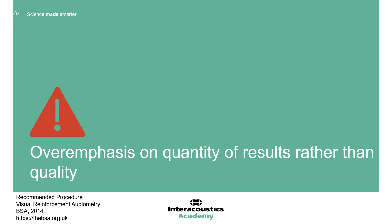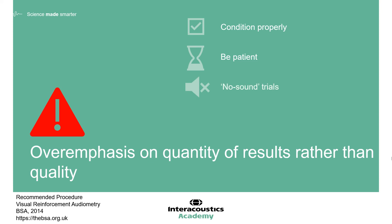It is understandable to want to obtain as many results as possible in a given session; however, testing one or two frequencies reliably is worth much more than rushing through four or more frequencies with questionable reliability. It is always worth investing time in correct, effective conditioning at the start of the session, rather than hurrying down to quieter levels. VRA does require patience, and if stimuli are presented rhythmically, then the child's responses can also become rhythmic. Varying stimulus presentation timing and using a healthy number of no sound trials will add to the reliability of the test.